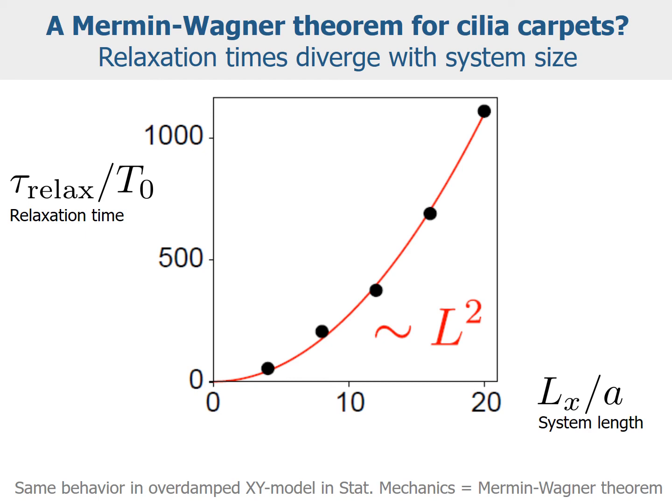Next, we can ask what would happen if we simulate a larger cilia carpet. We find very similar results for the linear stability analysis — again a dominant wave mode attracting almost all initial conditions. But there is one difference: the relaxation time of the slowest decaying perturbation mode for the dominant metachronal wave diverges with system length. This is actually a dynamic analogue of a famous result in statistical mechanics — the Mermin-Wagner theorem for equilibrium systems — and here we find a very similar result for a non-equilibrium system.